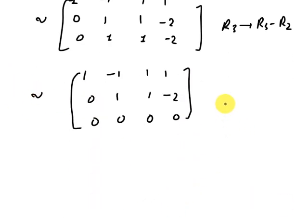Now apply R1 is R1 plus R2. Then here we get 1, 0, 0, 0, 1, 0. This one is 1 plus 1, 2, 1, 0. And here we get 1 minus 2 is minus 1, minus 2, 0.